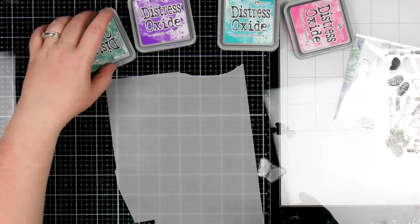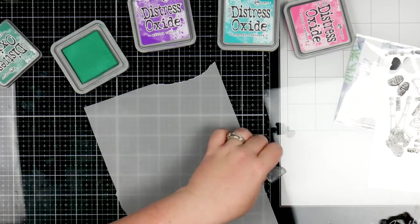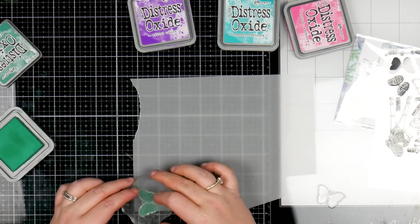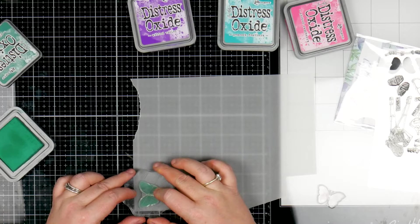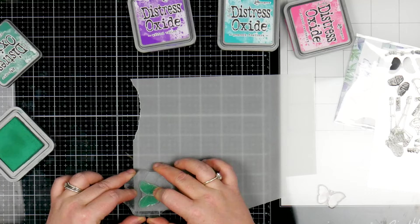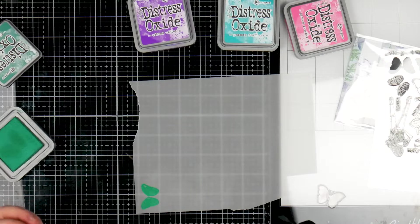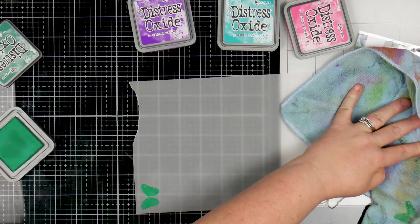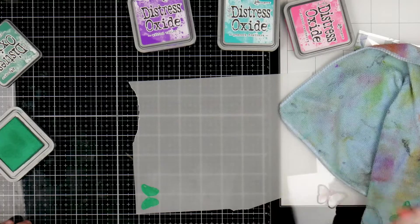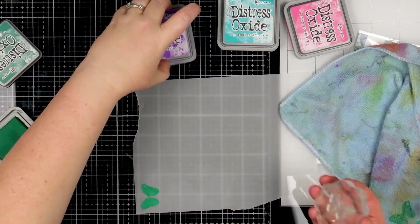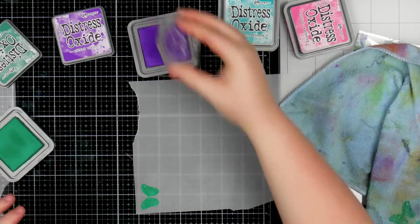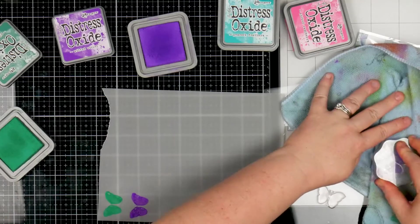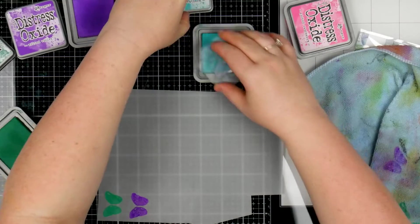Now stamping on vellum doesn't always work. It's sometimes a little slippery. So my suggestion with it is load it up, put it down and put it down once and that's it. Don't try to push too hard. Don't try to wiggle it. Just put it down once, leave it for a second to kind of fill up and then pull off. Now, because it is oxide and because it is vellum, it's going to sit on top of it. So what I'm going to do is stamp all of the ones I want out.